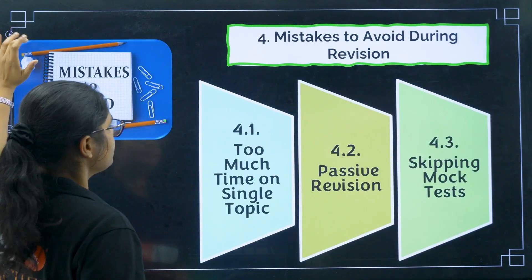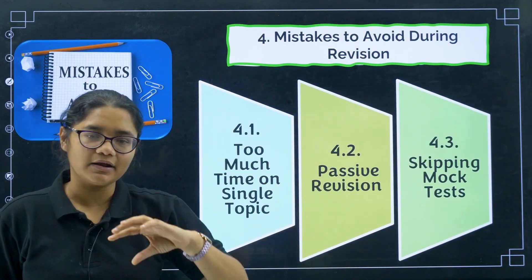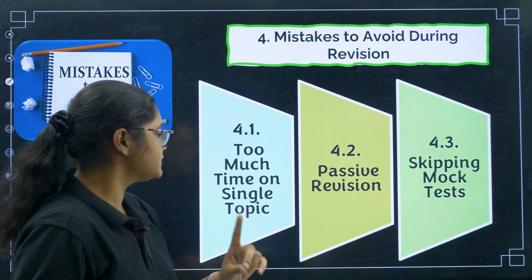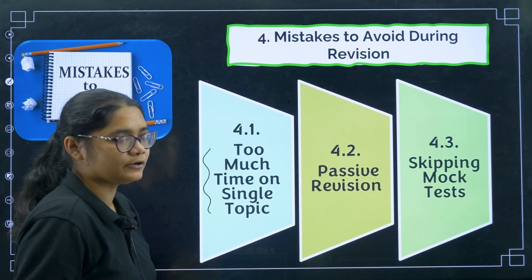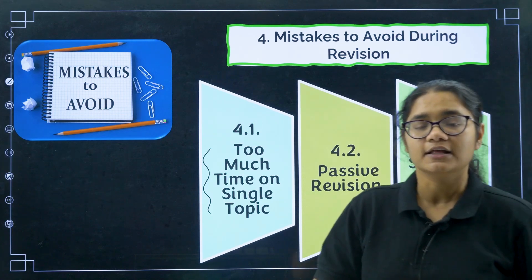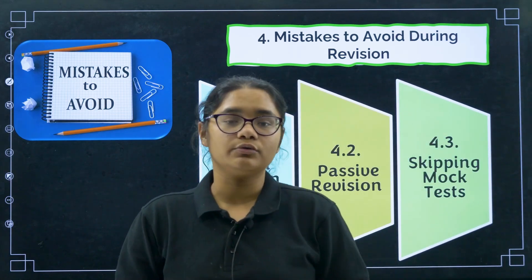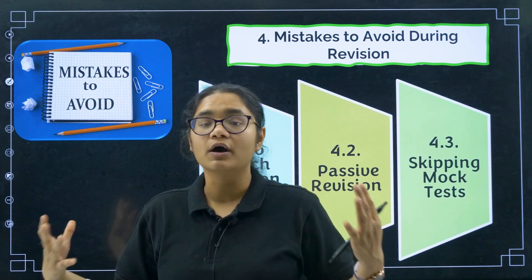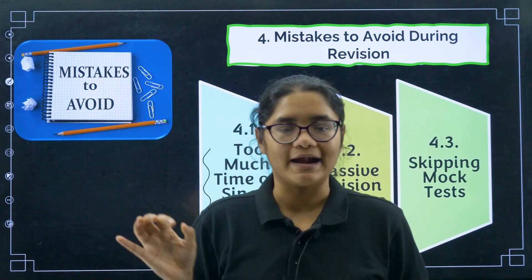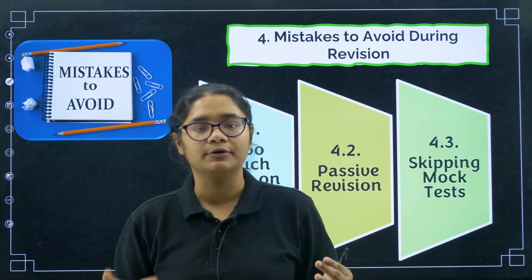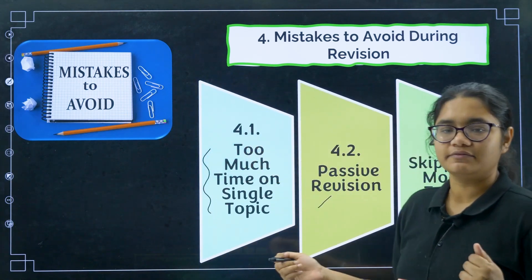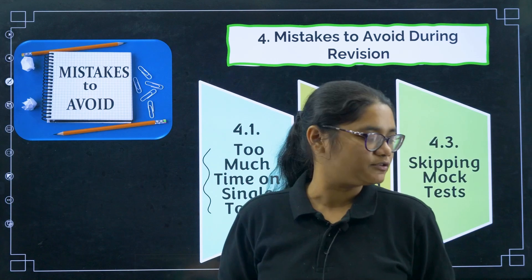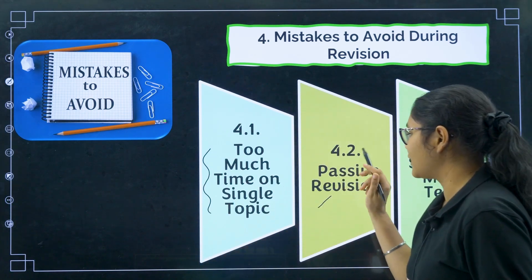Now, what should you avoid during revision? The first mistake is spending too much time on a single topic. You might think you haven't studied a topic completely and spend the whole day on it — don't do that. Focus only on high-weightage topics. Work smarter, not harder, at this point in time. Only the high-weightage, most repeated, most important topics should be covered. Second, avoid passive revision — just sitting and reading your notes is not a good way to revise; it is a complete waste of time.